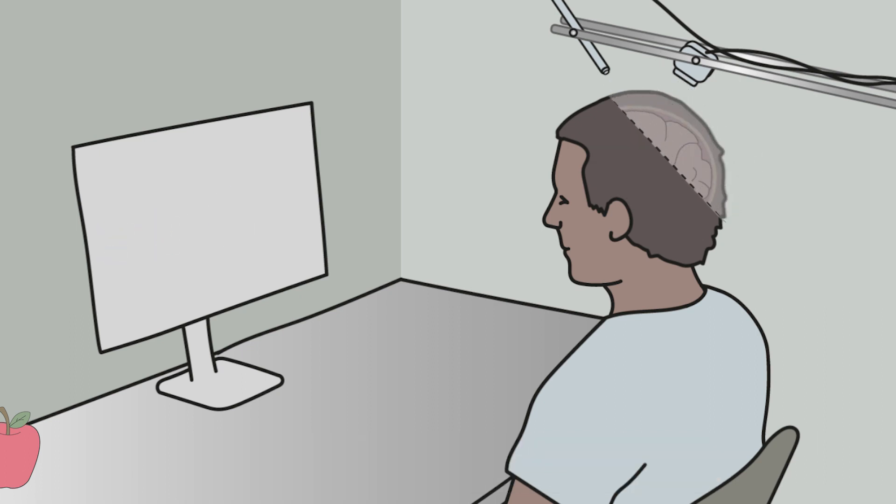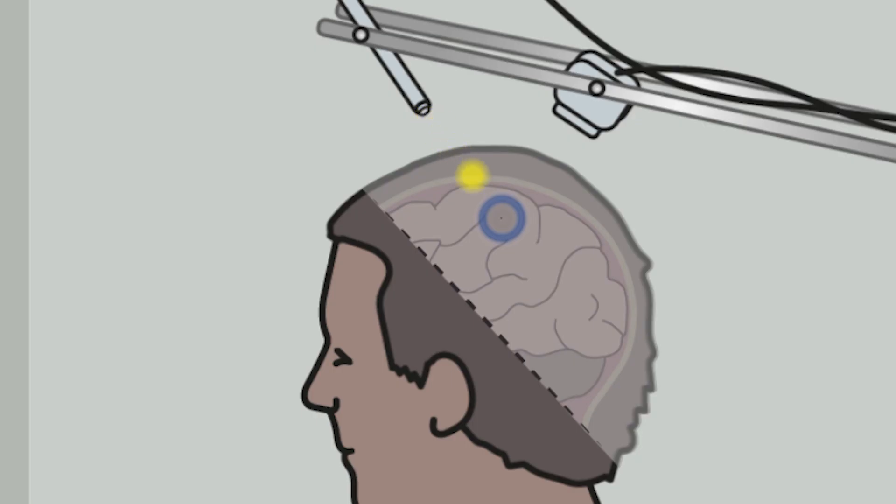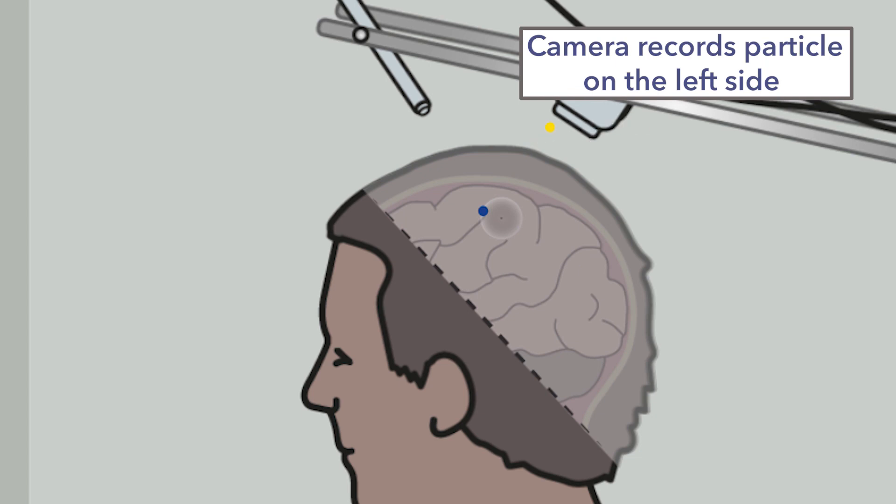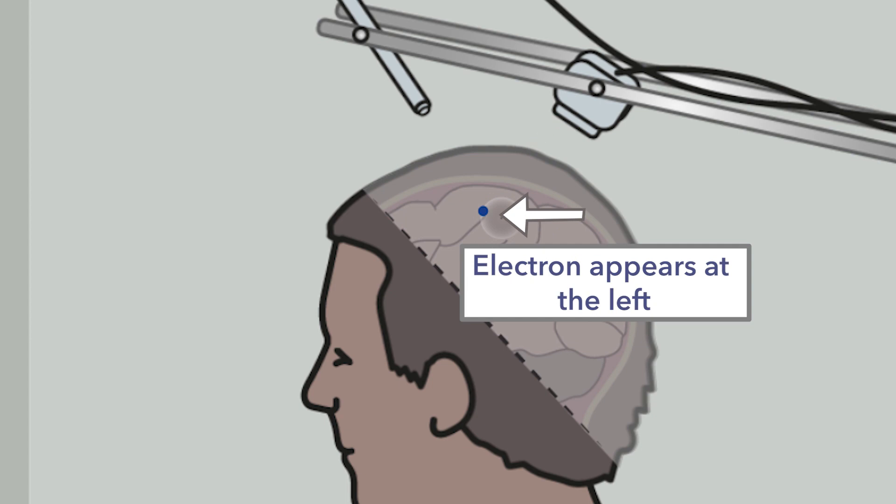Let's have a look inside the brain. If the person managed to let the particle appear at the left of the screen, it means that the camera recorded the particle at the left side because it's connected to the screen. That means that the person let the electron of all options appear at the left, because the light particles are reflected at the position where the electron appears.